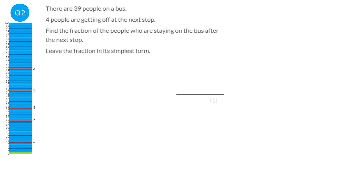If there were thirty-nine people on the bus, and four people got off the bus, that would leave thirty-five people remaining on the bus. So the fraction of people staying on the bus is thirty-five out of the thirty-nine people on the bus. As a fraction, the answer is thirty-five over thirty-nine, and we can't cancel that any further.